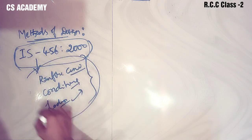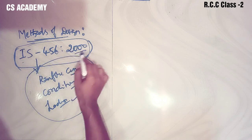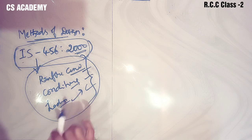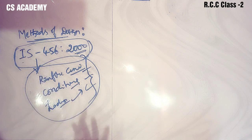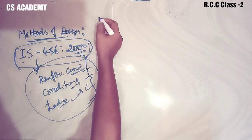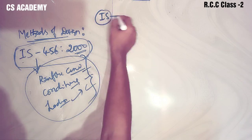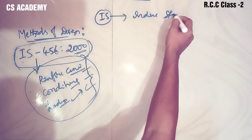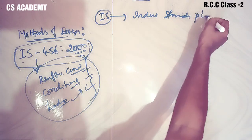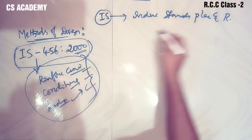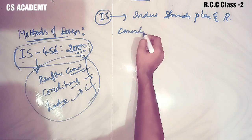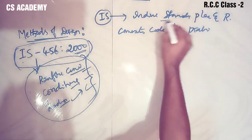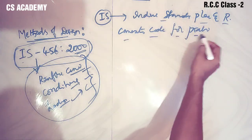So we follow the guidelines. What are Indian Standard IS 456-2000? IS 456-2000 is the Plain and Reinforced Concrete Code of Practice, published by BIS - the Bureau of Indian Standards, Delhi.